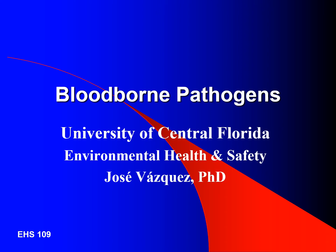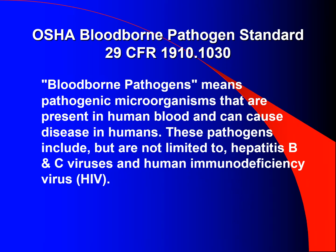Welcome to EHS 109 Bloodborne Pathogens Online Training Module. OSHA, also known as the Occupational Safety and Health Administration, Bloodborne Pathogen Standard 29 CFR 1910.1030. Bloodborne pathogens means pathogenic microorganisms that are present in human blood and can cause disease in humans. These pathogens include, but are not limited to, hepatitis B and C viruses and human immunodeficiency virus, also known as HIV.